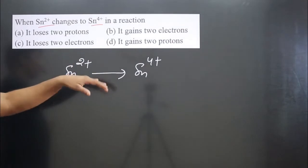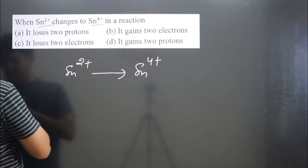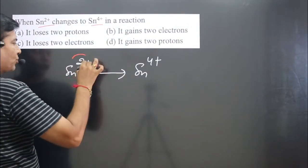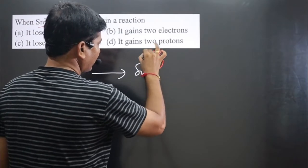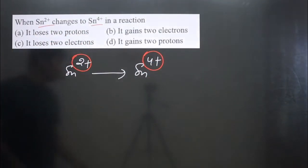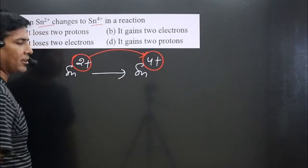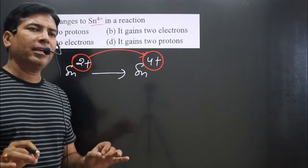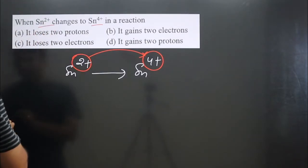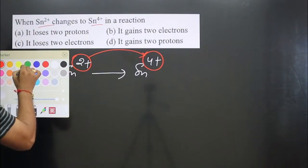If we compare the oxidation numbers, on the left side it is present in +2 oxidation number and on the other side it is present in +4 oxidation number. If you compare the oxidation numbers, you can see that the oxidation number is increasing, and we have learned in redox reactions that a decrease in oxidation number is always reduction.